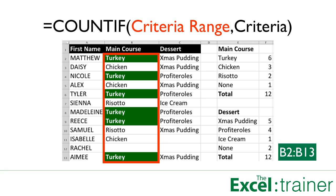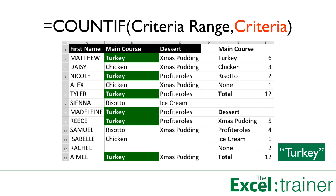The COUNTIF function requires two arguments. The first argument is the criteria range — the cells that contain the given value. In this spreadsheet we need to count the number of times the word turkey occurs in the range B2 to B13, so B2 to B13 is the criteria range. The second argument is the criteria itself, which can be a number, a word, a date, or more usually a cell reference.